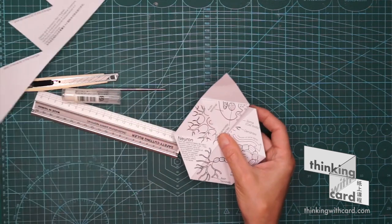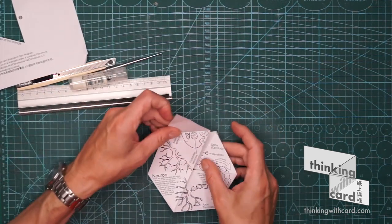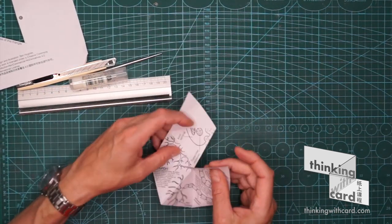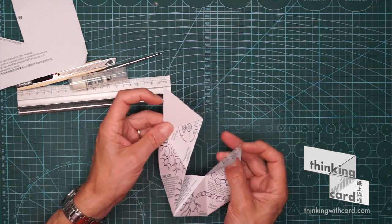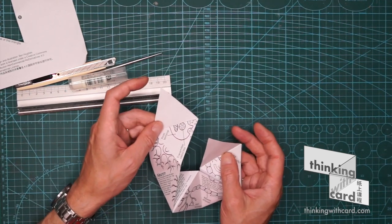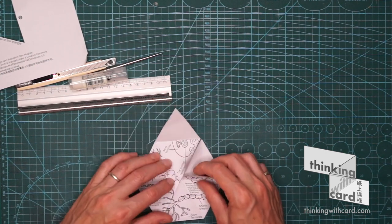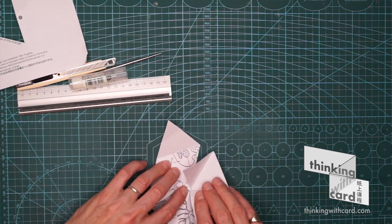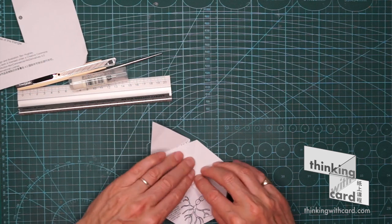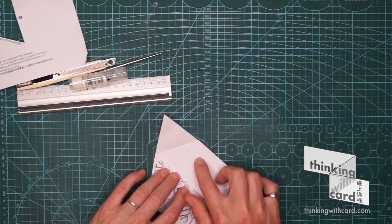By looking at the rest of the model, we can see that these two flaps are going to be glued together. And there's also another flap here that needs gluing. So there's four flaps.